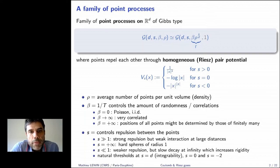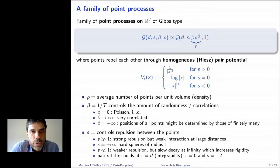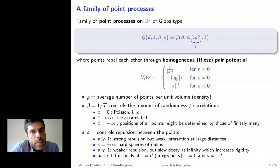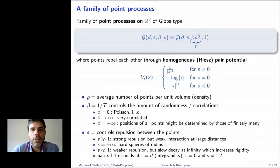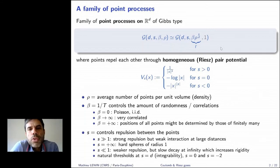Because of the homogeneity, there is a scaling in the problem: we can always choose ρ = 1, replacing β by β ρ^{s/d}, which in the physics literature is usually called γ. So in this talk I will often assume ρ = 1 and use β as my only parameter, though perhaps I should call it γ.